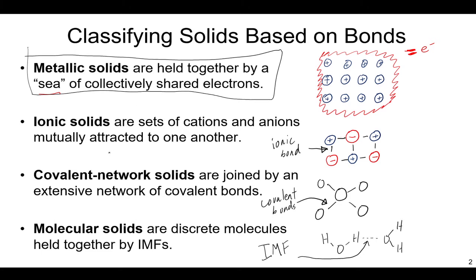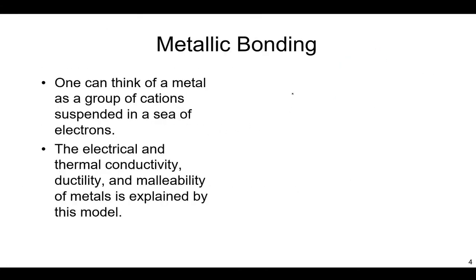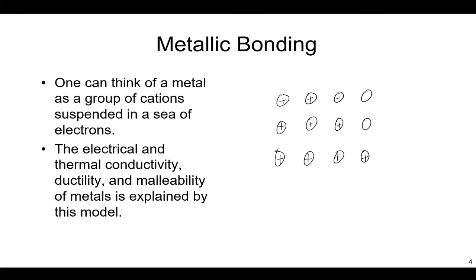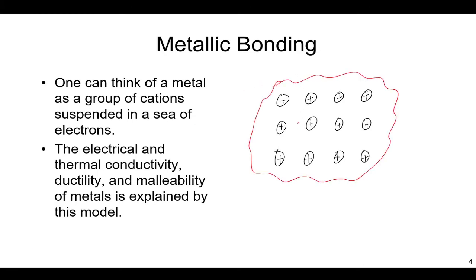Returning to metallic solids: we can think of these as a bunch of metal atoms that give up some electrons, becoming positive ions in a nice, neat, ordered structure. The electrons they've given up don't belong to neighboring atoms — they belong to all the atoms at the same time. It's a group of cations in a sea of electrons. The electrical and thermal conductivity, ductility, and malleability of metals is explained by this model.